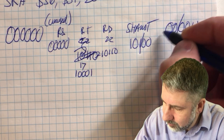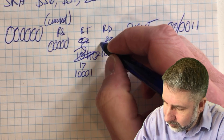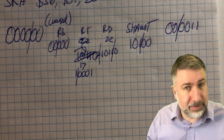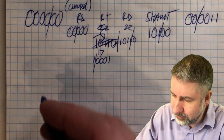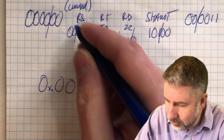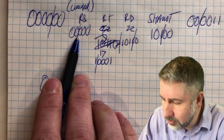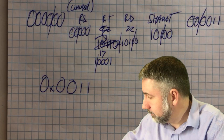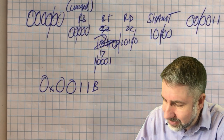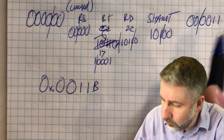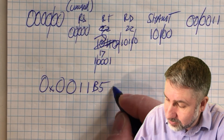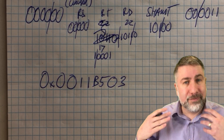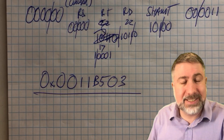Breaking the SRA instruction into 4-bit hex groups: 0000 is 0, 0000 is 0, 0001 is 1, 0001 is 1... then 1011 is B, 0101 is 5, 0000 is 0, 0011 is 3. So the final hex value is 0x000B5003. Wait — working through carefully: the groups give 0, 0, 1, 1, B, 5, 0, 3. That's our final value for the instruction.